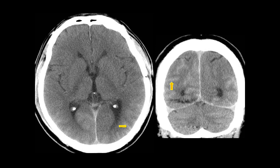Here you can see subtle subarachnoid hemorrhaging affected by poor patient positioning. Bilaterally there is loss of the grey-white matter junction and linear attenuation intensities are visible, but these could be mistaken for positioning artifacts when the patient is off the isocenter of the scanner — causing partial volume artifacts as the attenuation profiles from the rotating tube don't superimpose correctly. However, on the coronal reconstruction the yellow arrows clearly confirm this is a definite subarachnoid hemorrhage.